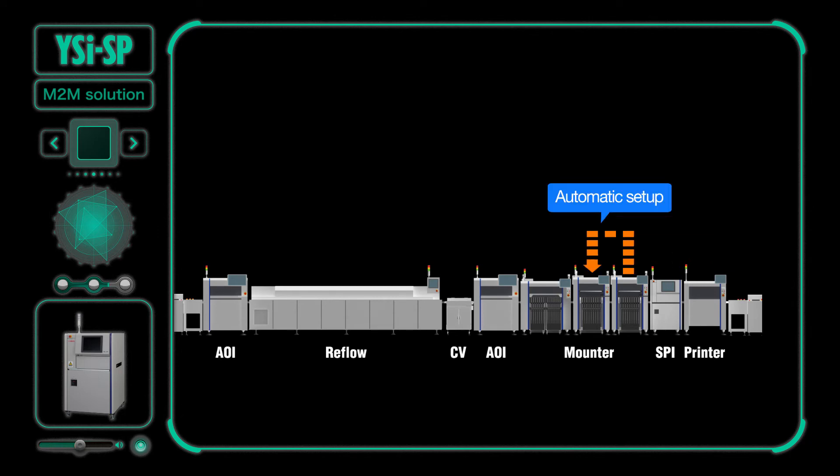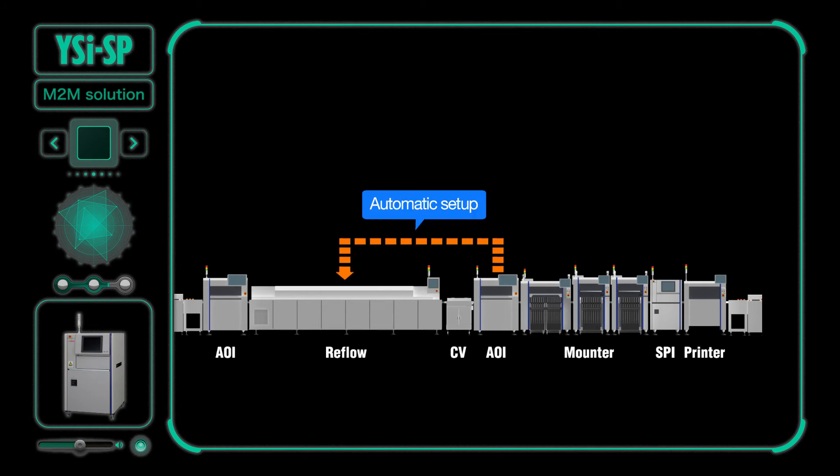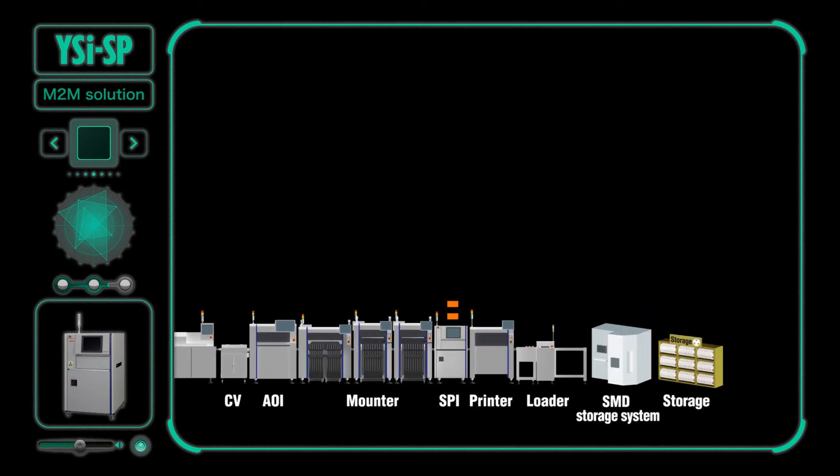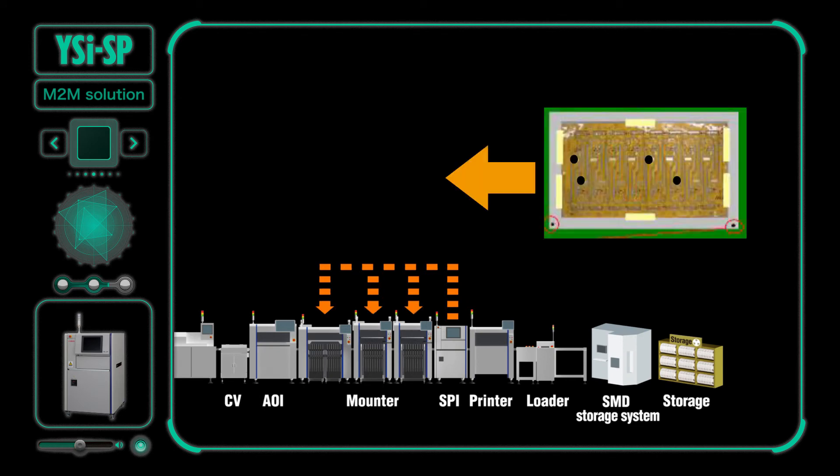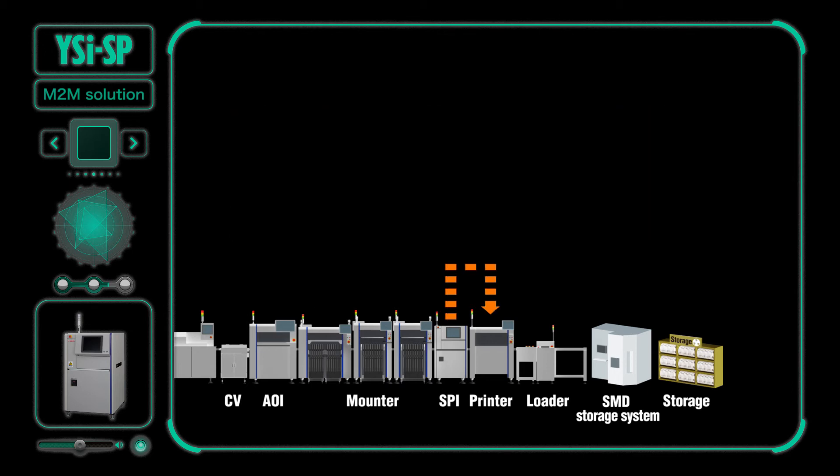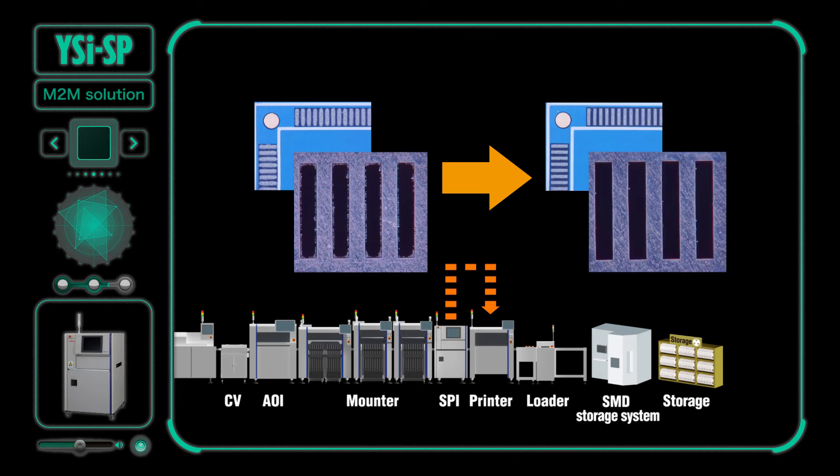By linking the printer, SPI to mounter, and SPI to AOI, automatic setups can be performed. Bad mark information is fed forward from the SPI to the mounter, which improves productivity. SPI to printer: Solder position information and cleaning commands are fed back to improve print quality.